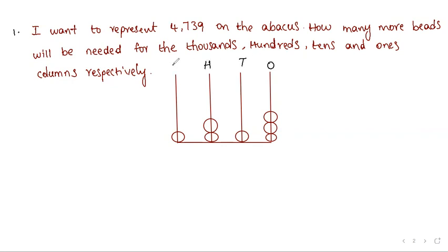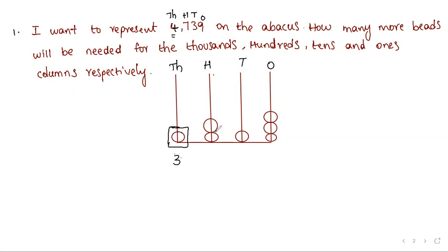On the abacus we have ones place, tens place, hundreds place, and thousands place. One number is already shown: one thousand two hundred and thirteen. We need to represent four thousand seven hundred and thirty-nine. Thousands place: already one bead is there, we need four, so we need three more beads. Hundreds place: already two beads are there, we need seven, so five more beads are needed.